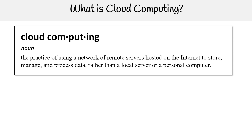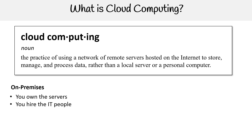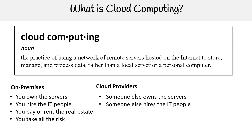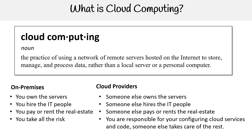When we're talking about local, we describe this as being on-premise — your own office or your own data center — where you own the servers, you hire the IT people, you pay the rent or the real estate, and you take all the risk. Whereas with a cloud provider, it's someone else who owns the servers, someone else who hires the IT people, someone else who pays or rents the real estate, and you are only responsible for configuring your cloud services and code — someone else takes care of the rest.